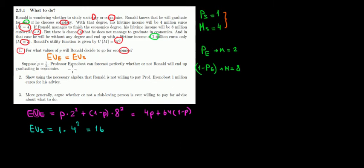Now what did we say? We said we want to make them equal. So expected utility from economics must equal expected utility from sociology, which means that 4p plus 64 times (1 minus p) must equal 16.